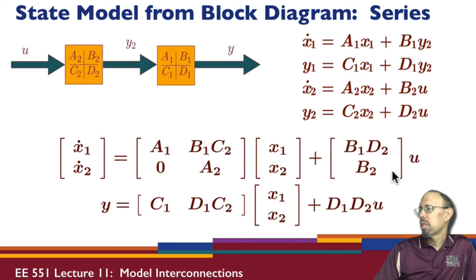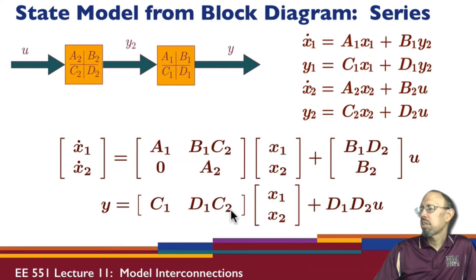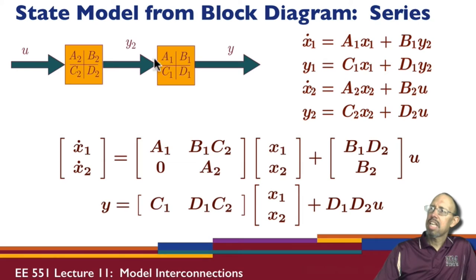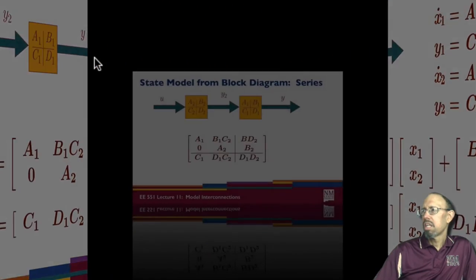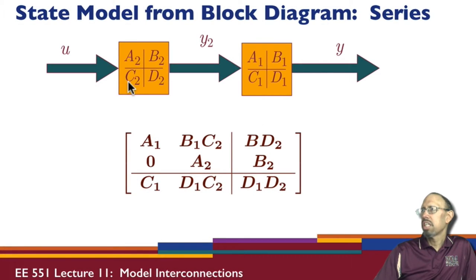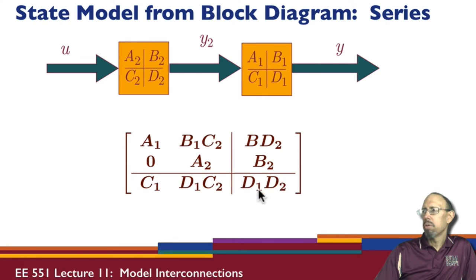The second equation is simpler: x2-dot equals A2*x2 plus B2*u. The overall output y equals y1, so it's C1*x1 plus D1*C2*x2 plus D1*D2*u. We can combine the states of models in series this way, thinking of the interconnection as having the combined state model with A1, B1, C1, D1, A2, B2, C2, D2. Notice that if either D1 or D2 is zero, that term will be zero.